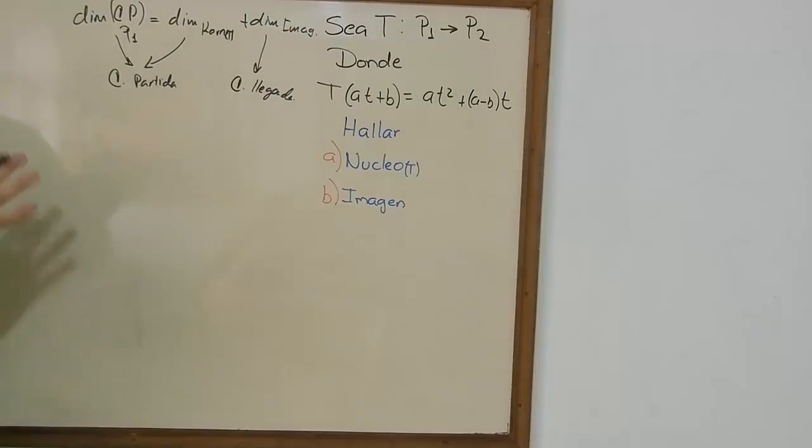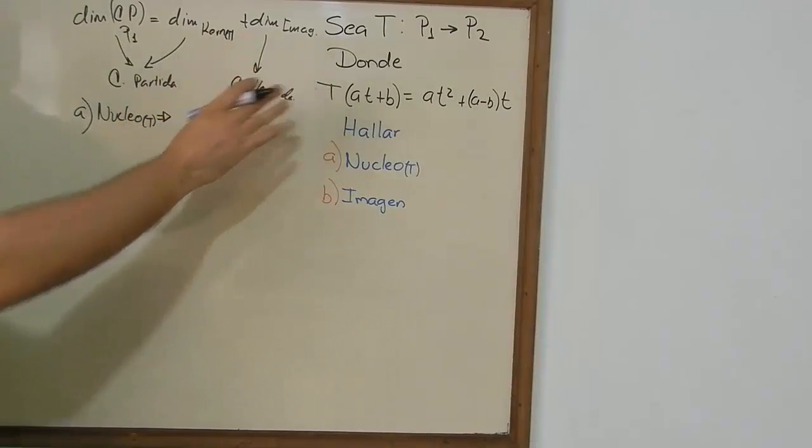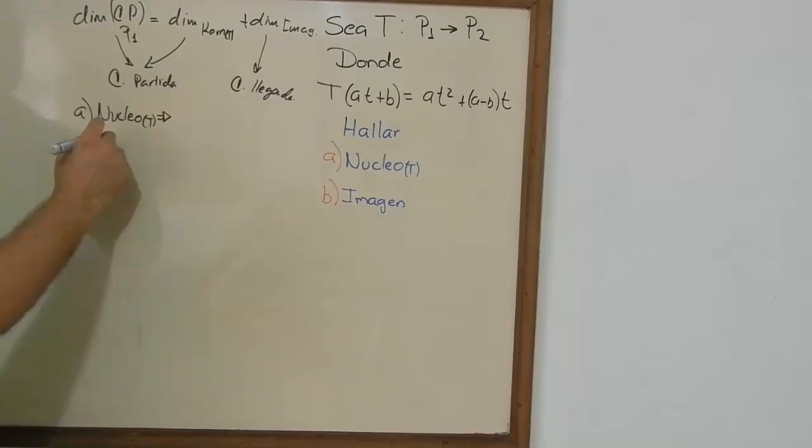That's very simple, right? It'll save us a lot of trouble. So we need to find, first of all, the kernel or the nucleus of this transformation, which is only the set of vectors where the transformation is equal to 0. So that's what we're going to do.